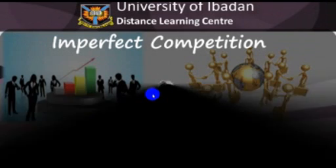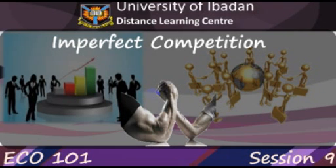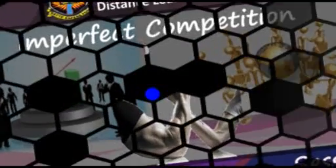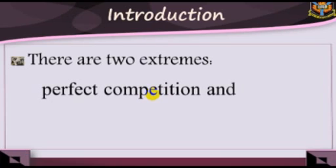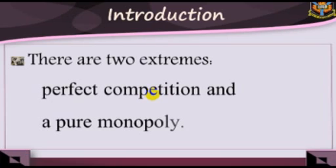Welcome to ECHO 101, Study Session 9, Imperfect Competition. Introduction. On a continuum of market structure, there are two extremes: perfect competition and a pure monopoly.